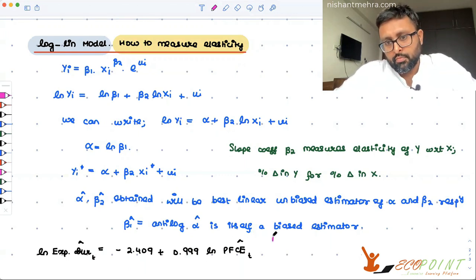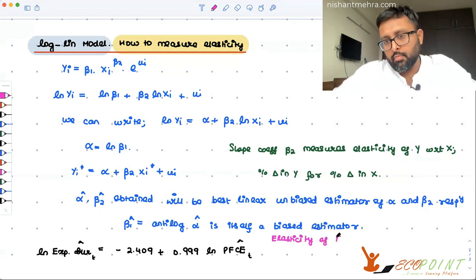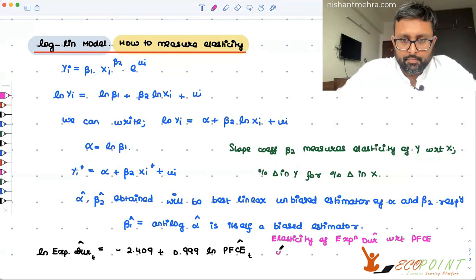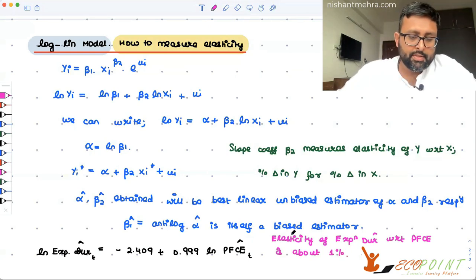You can also write: elasticity of expenditure on durable goods and services with respect to PFC is about 1%. It means if there is a 1% increase in private final consumption expenditure, it will bring about 0.999 percentage increase in expenditure on durable goods and services.